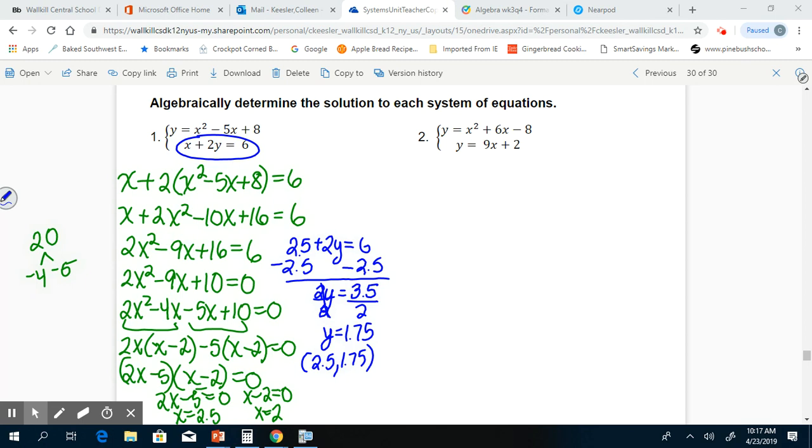Then if I plug in just the 2: 2 plus 2y equals 6 minus 2. 2y equals 4. Divide by 2, and y equals 2 again. So my other solution would be 2, 2. And I could also verify this by pulling up my calculator and putting those equations in to make sure that those are where they really do cross.